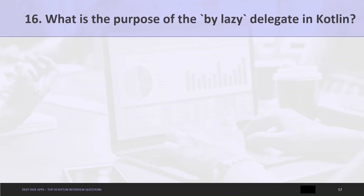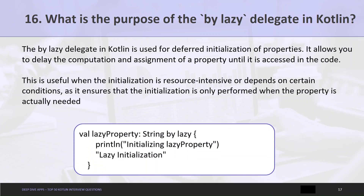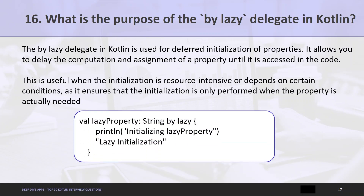Question 16: What is the purpose of the by lazy delegate in Kotlin? The by lazy delegate is used for deferred initialization of properties. It allows you to delay the computation and assignment of a property until it is first accessed. This is useful when initialization is resource-intensive or depends on certain conditions, ensuring initialization is only performed when the property is actually needed.